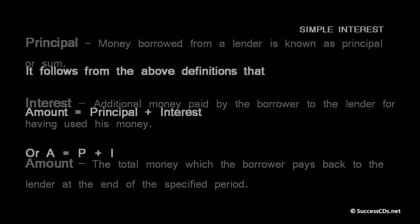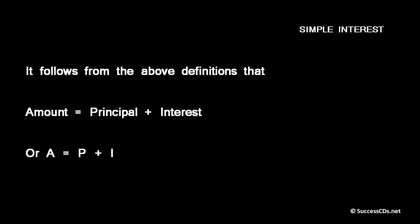It follows from the above definitions that amount will always be equal to principal plus interest. Now amount we write as capital A, principal we write as capital P and interest as capital I. So basically we can write this formula as A equals P plus I.